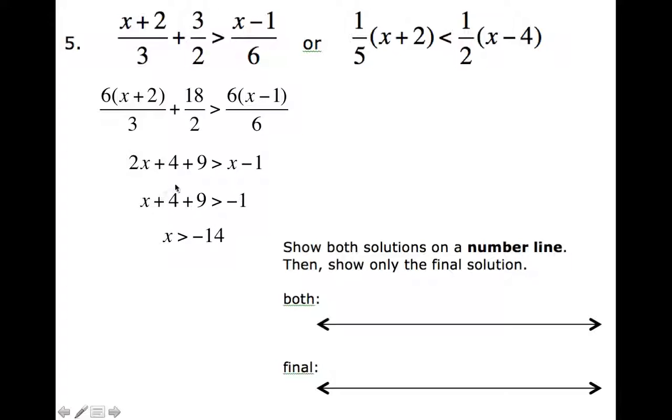Now this 4 and the 9 make 13. So I subtracted 13 from this side, subtract 13 here. I get this: x is greater than negative 14.